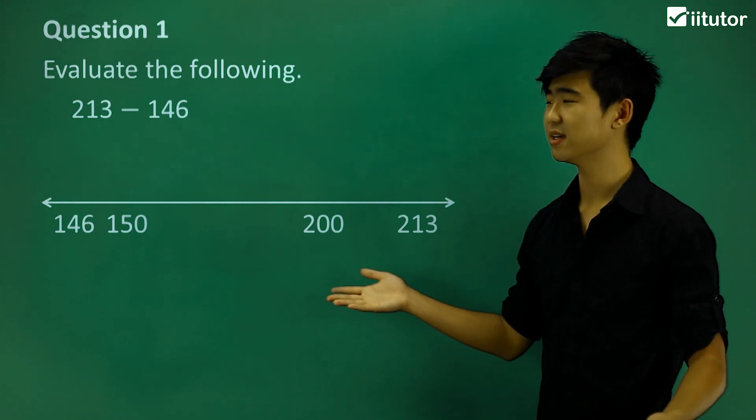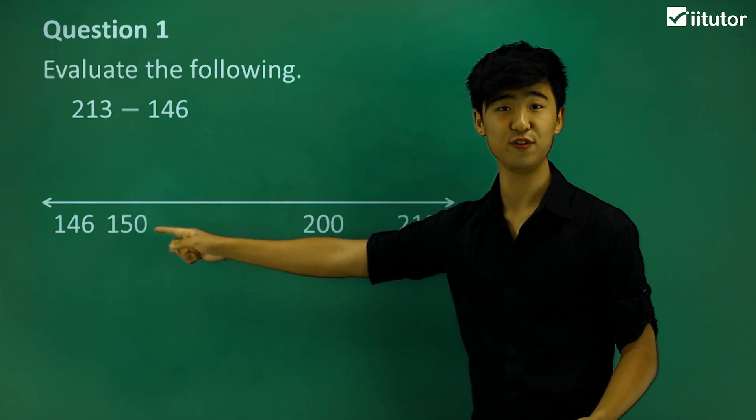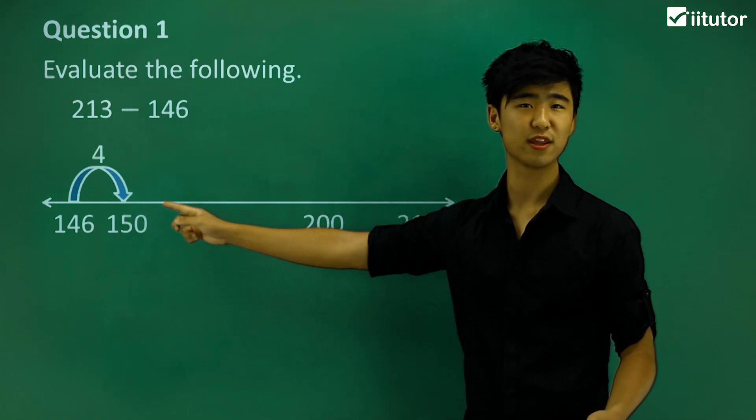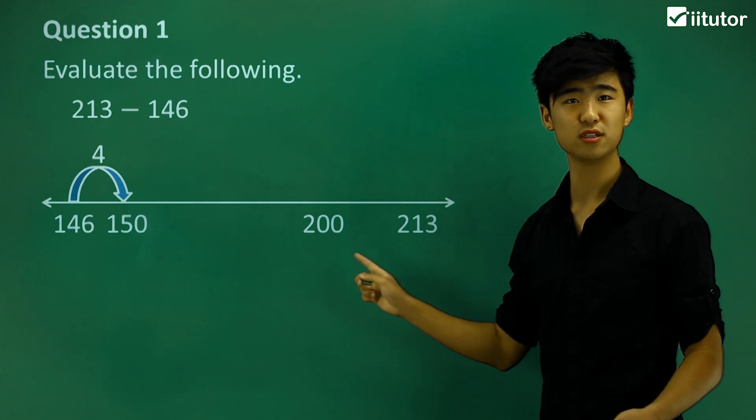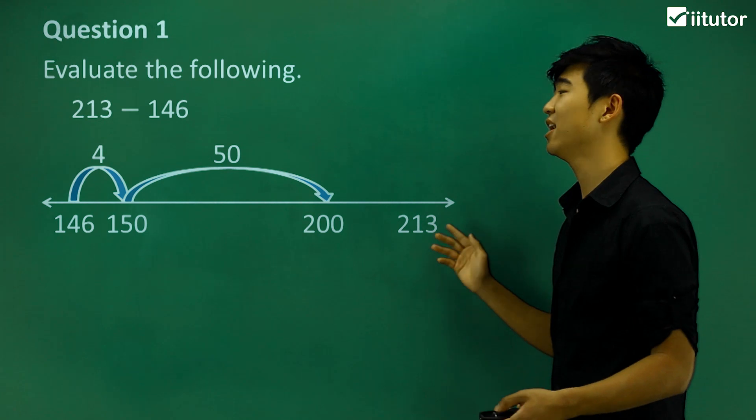So what am I doing? Find the difference between 146 to 150, which is 4. The difference from 150 to 200 is 50. And the difference from there to 213 is 13.